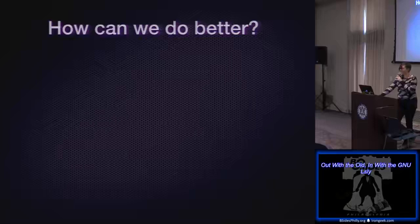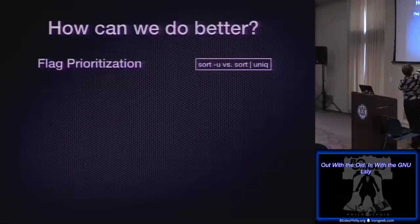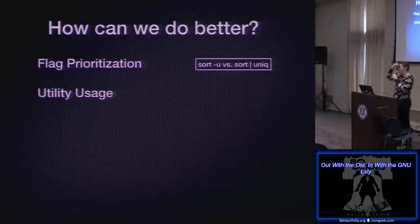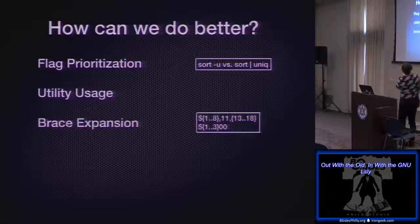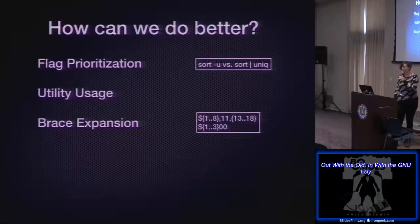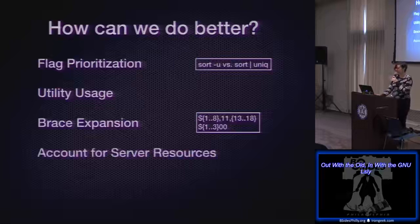So how can we do better at this? I have a little acronym — I made FUBAR different. You can prioritize your flags. For example, sort -u is the exact same as sort piped to unique, but it's going to be slightly faster and easier to load on the server. These things really add up. Utility usage — make sure if you're using aliases, be really careful. Aliases also need to be updated, just like one-liners you're going to use on a system. Brace expansion — a.k.a. curly boys. It's a lot easier to read for yourself, and it's a lot easier for the next person on the command line to see what you did. Please don't put variable one, variable two, variable three — it's so much easier to use brace expansion.